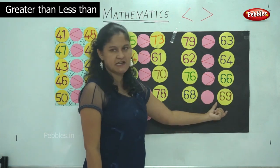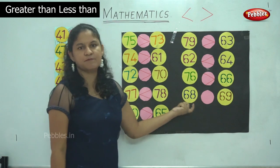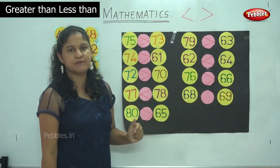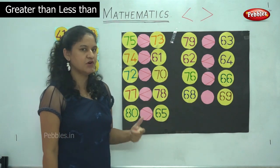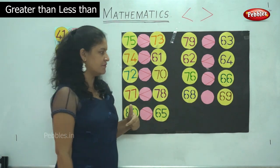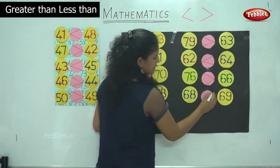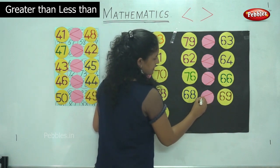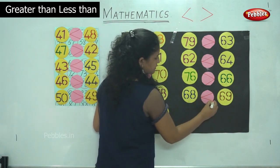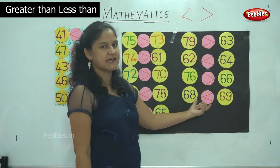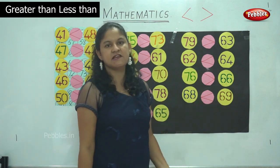Next we have 68 and 69. When you compare these two numbers, 69 is the bigger number or the greater number, so the mouth opens towards the bigger number. It is read as 68 is lesser than 69.